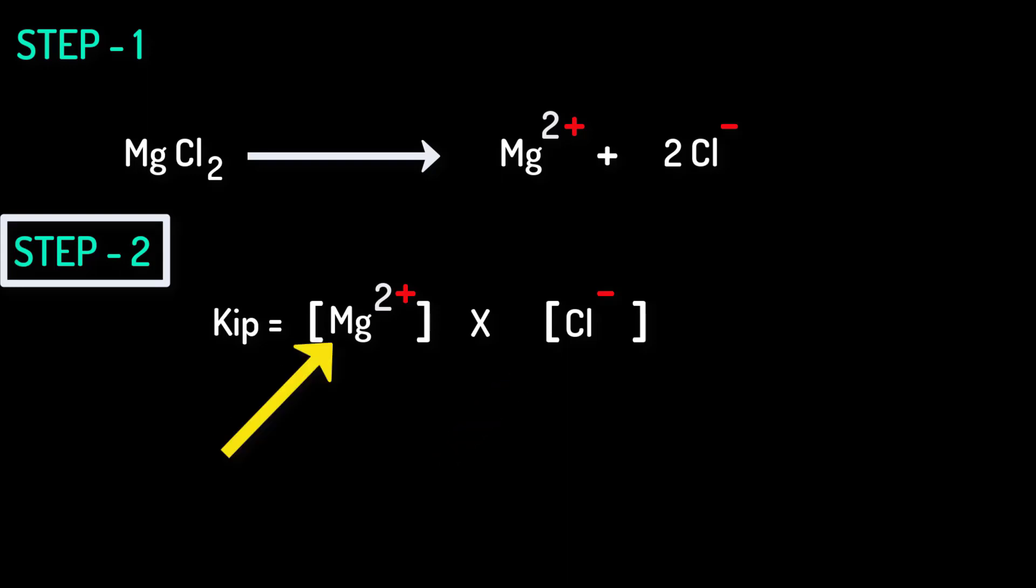Therefore this magnesium 2 plus ion in square brackets means the concentration of magnesium ions. Similarly this chlorine 1 minus ion in square brackets means the concentration of chlorine ion.